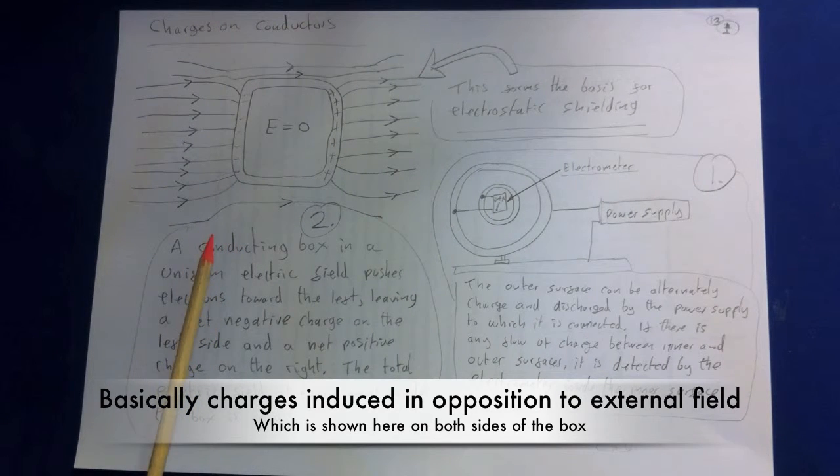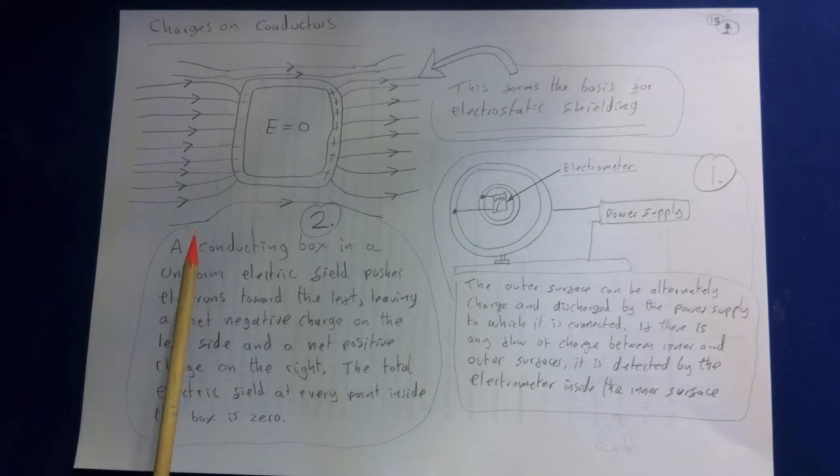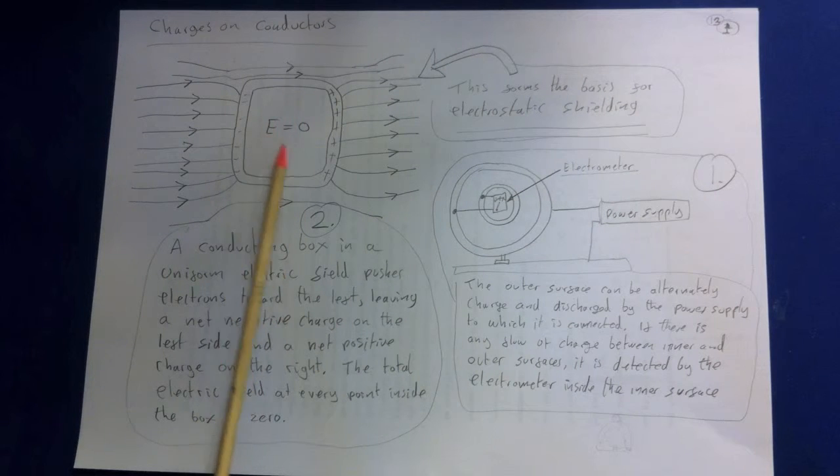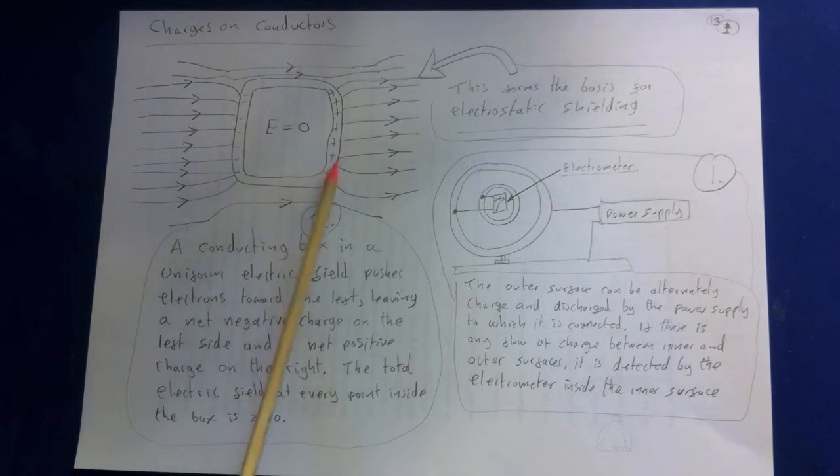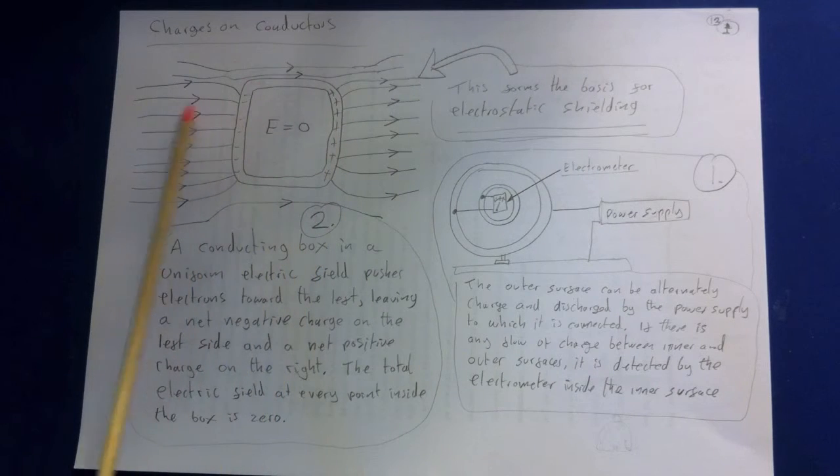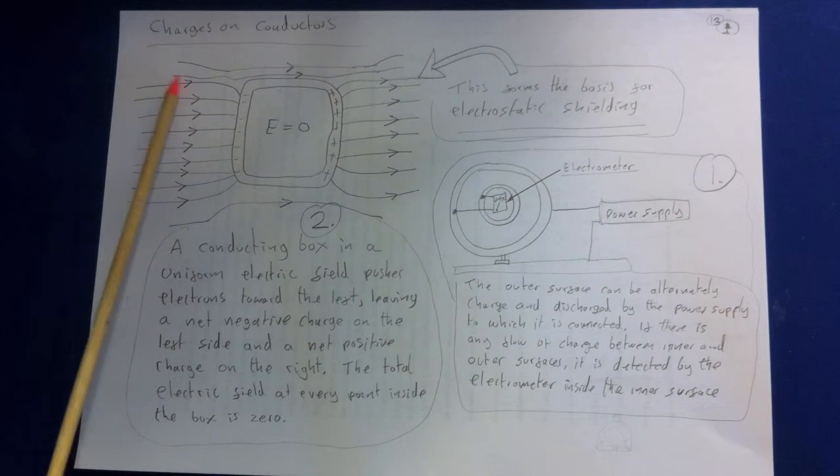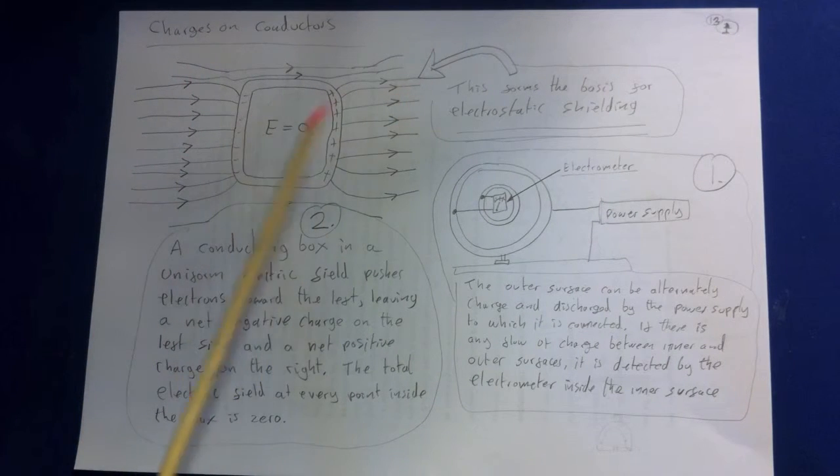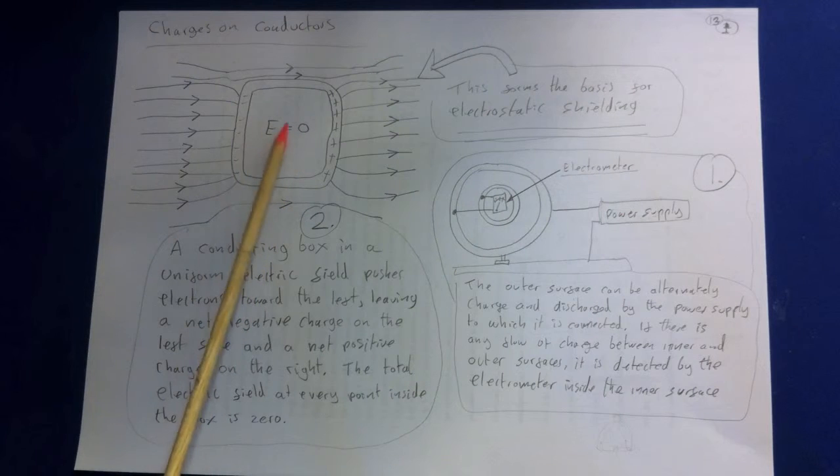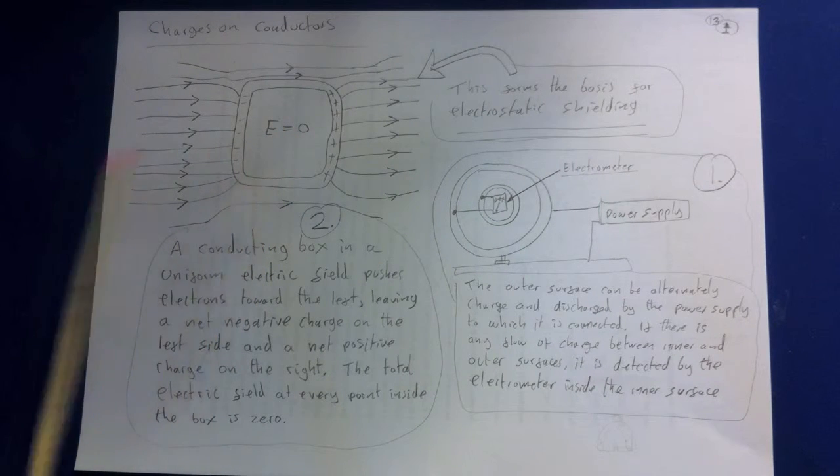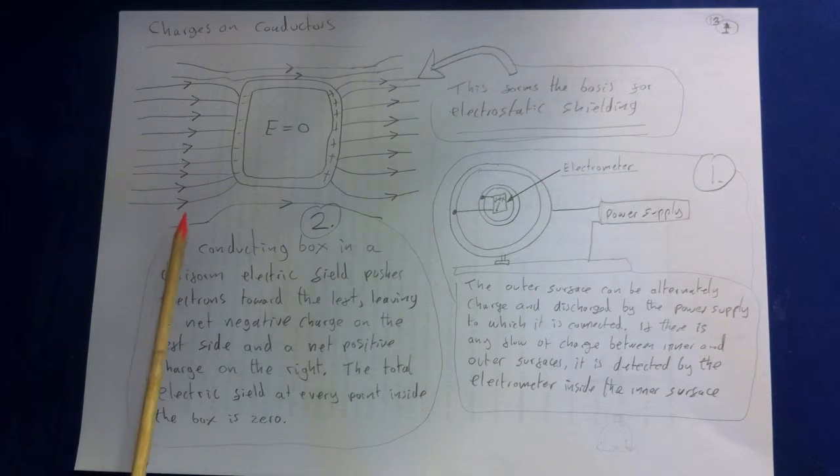The external electric field redistributes the free electrons in the conductor, leaving a net positive charge on the outer surface in some regions and a net negative charge in others. Since no charges are within the metal box, there's no electric field lines at all inside the box. If you place an experiment inside a metal box, it doesn't matter what's going on outside the metal box, no matter how strong these electric fields are, it's not going to affect the experiment at all. This is the whole basis of electrostatic shielding.